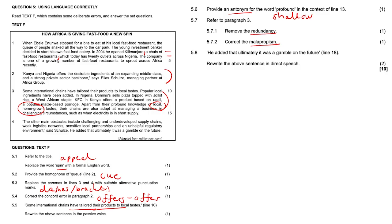And 5.7.2, malapropism. 'Oh, I swam in the specific ocean'—you didn't swim in the specific ocean, you swam in the Pacific ocean. So you know, very similar word, similar sounding word, just used incorrectly. This one is a little bit more difficult. So 'apart from their profound knowledge of local homegrown tastes, their chains are also adapt at managing a business.' They're not 'adapt' at managing a business, they're 'adept,' okay, like they're knowledgeable, like they've got the know-how.